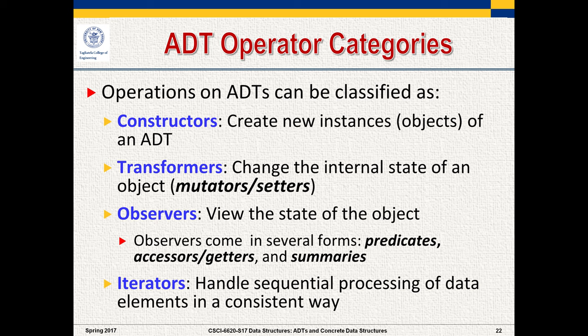The fourth kind of operation is called an iterator. An iterator allows you to process data elements in a consistent, sequential fashion. In the standard template library in C++, there are a whole bunch of iterators that allow you to iterate through the contents of a list, a queue, or the nodes in a tree. These are essentially objects in and of themselves which provide access to other kinds of objects.